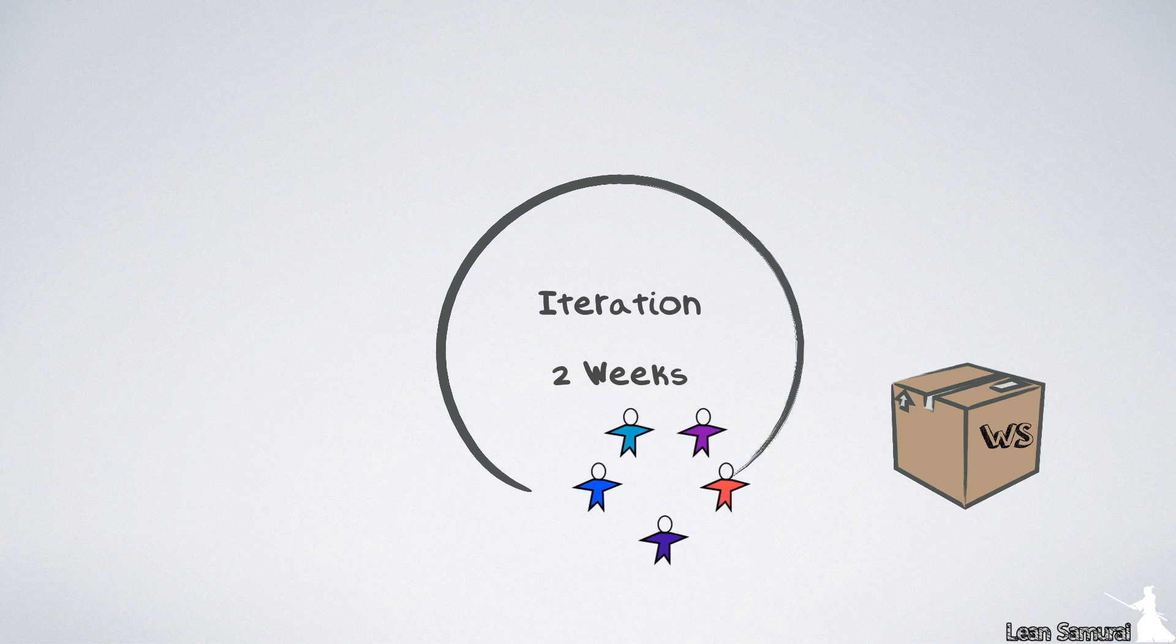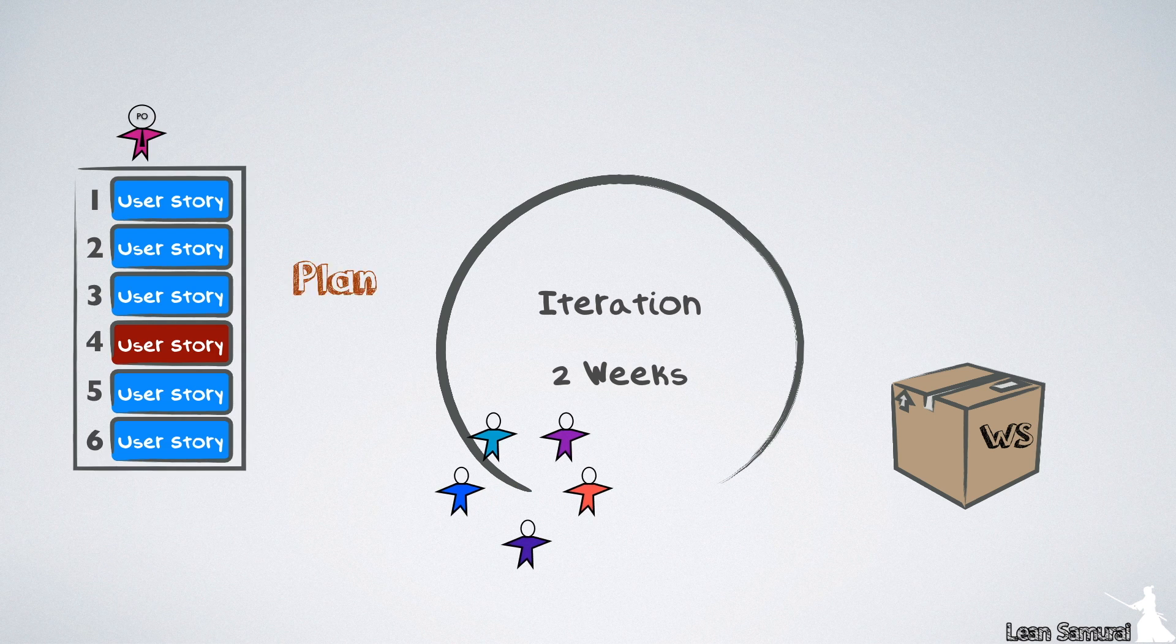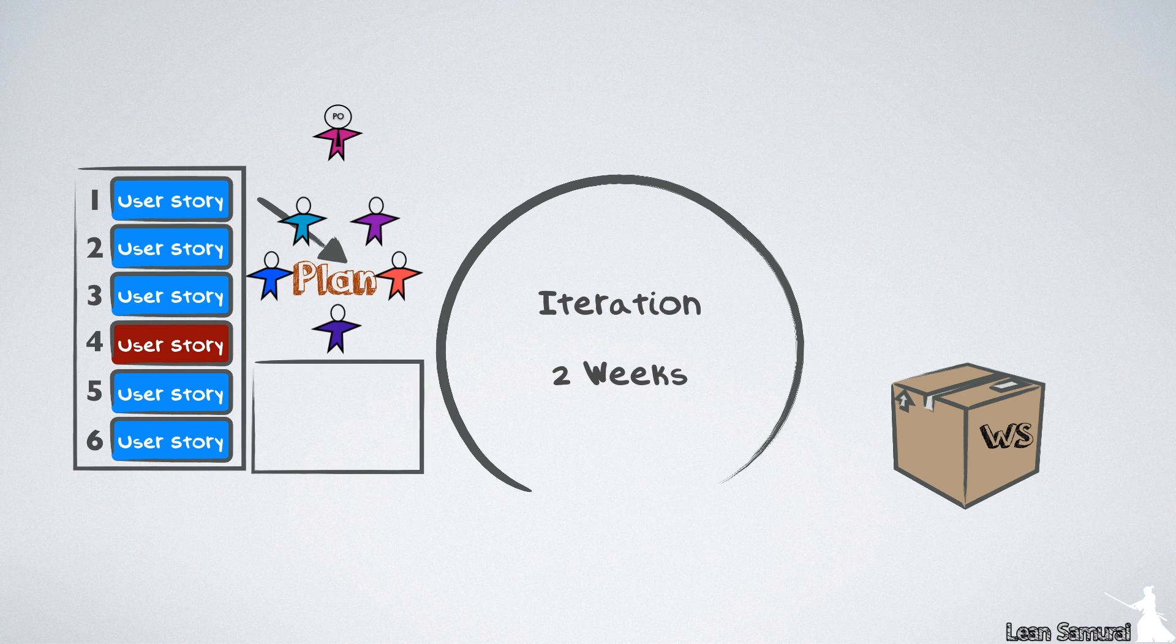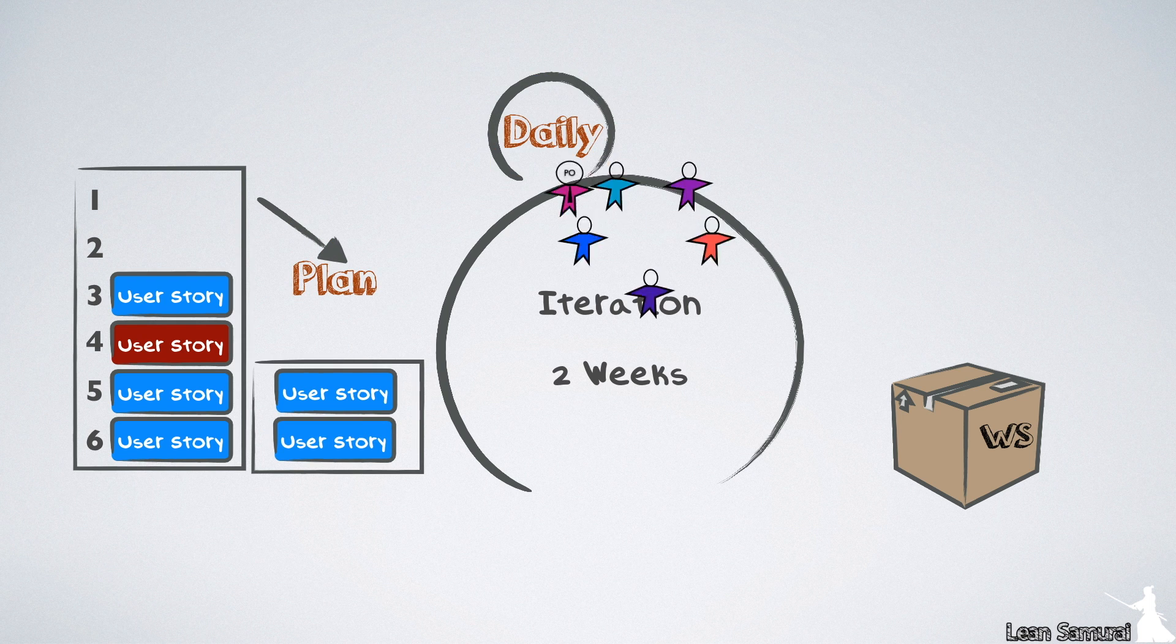The content for the iteration is determined by a product owner who is in charge of the team backlog. The iteration starts with a planning meeting, where the team decides what user stories they can deliver by the end of the iteration. Each day, the team needs to discuss their progress.